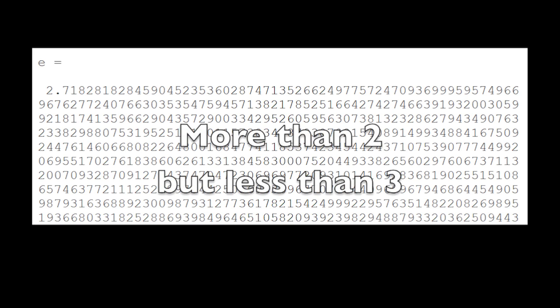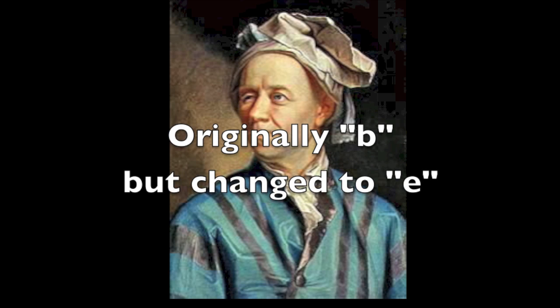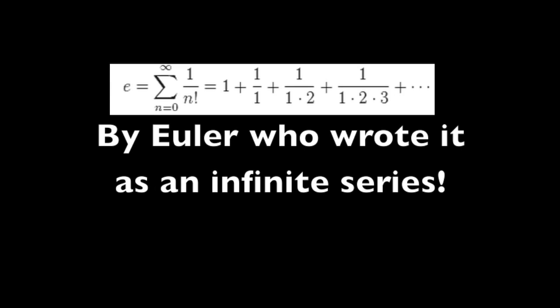more than two but less than three. E is nearer 2.7183. Originally B but changed to E by Euler who wrote it as an infinite series.